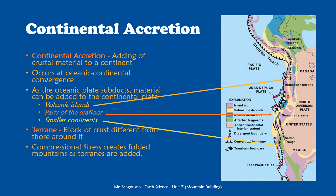We can see compressional stress here as we are smashing big pieces of rock together on the edge of this convergent boundary. We are going to see folded mountains created as these terrains are added. The difference between continental accretion and something like the really big continental-continental convergence boundary like the Himalayas is that this is happening over many small collisions over a large period of time. We are producing folded mountains that are usually not going to be as big as those seen at a continental-continental convergence boundary. But they will have lots and lots of different types of rocks in them, because it's not one big long-term collision — it's many collisions over a really, really long period of time creating these mountains with many different rock types.